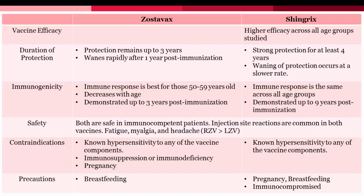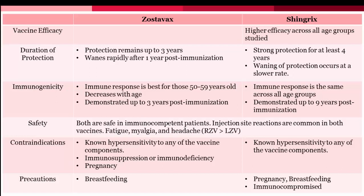Fatigue and myalgia are common with both vaccinations but have a higher incidence with Shingrix, along with headaches. Due to the adjuvant in Shingrix, which induces a high immune response, it is more reactogenic than Zostavax, leading to more reactions severe enough to prevent normal activities. However, these reactions are transient, lasting less than three days. Both vaccines cannot be used in patients with known hypersensitivities to the vaccine or any of its components. Shingrix has no known allergens, but Zostavax has allergens including neomycin and porcine gelatin. Additionally, Zostavax is contraindicated in immunodeficient and pregnant individuals and cautioned in breastfeeding, whereas those patient characteristics are only precautioned in Shingrix, not contraindicated.